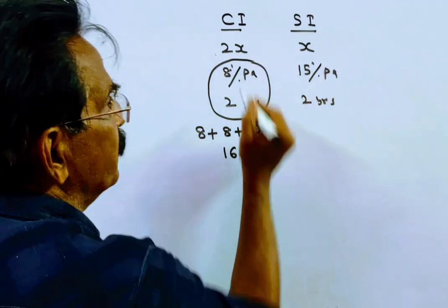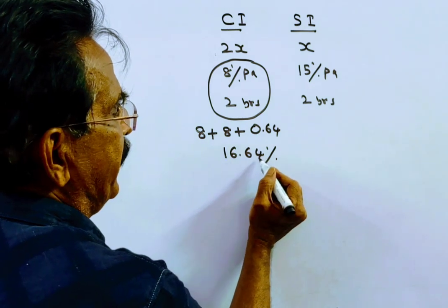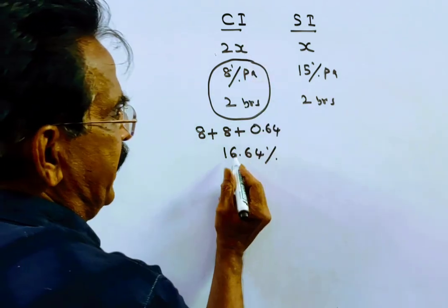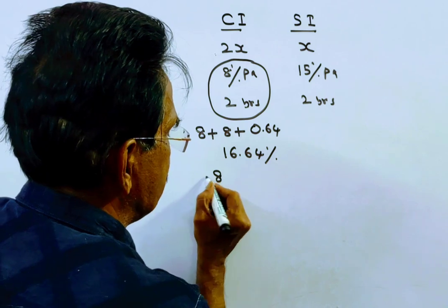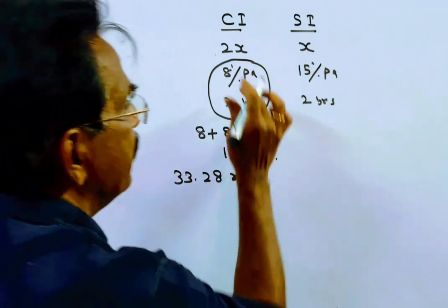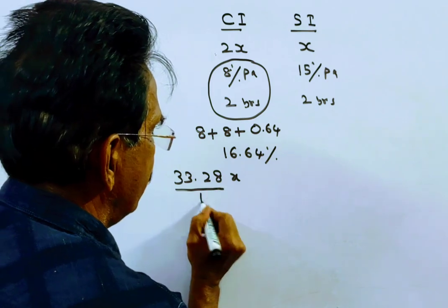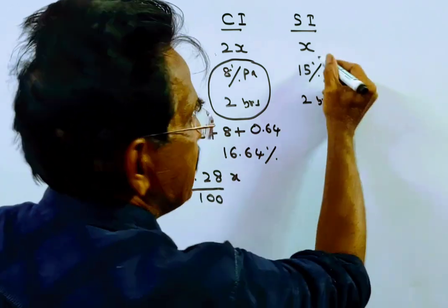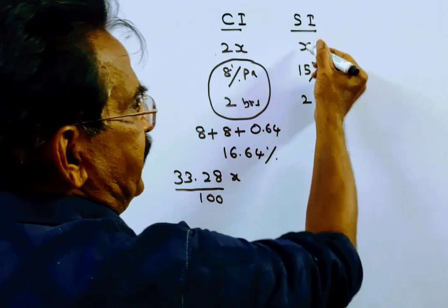This is PTR by 100. So 2X into 16.64 by 100 gives 33.28X by 100. And simple interest for 2 years is PTR by 100.